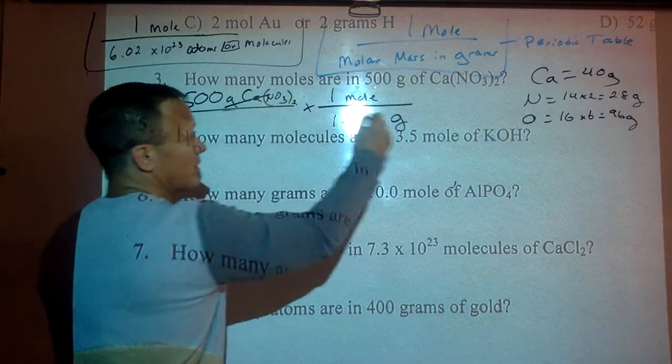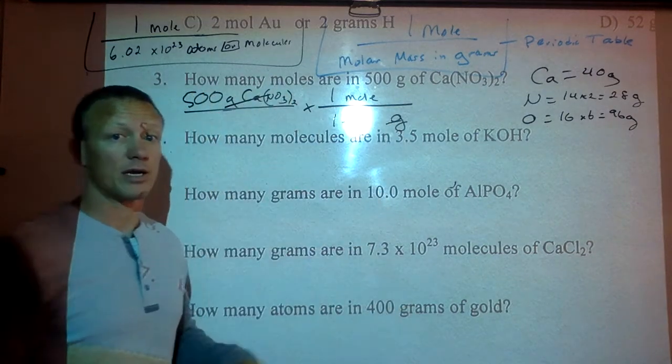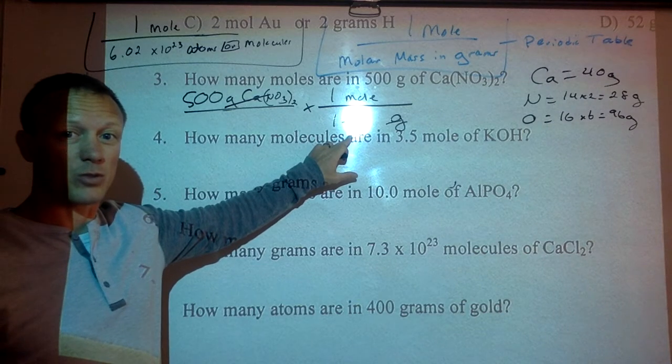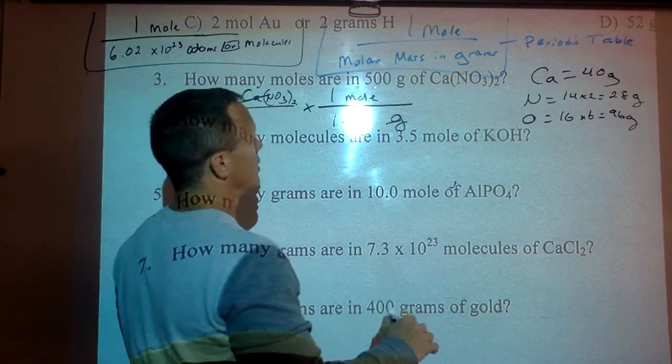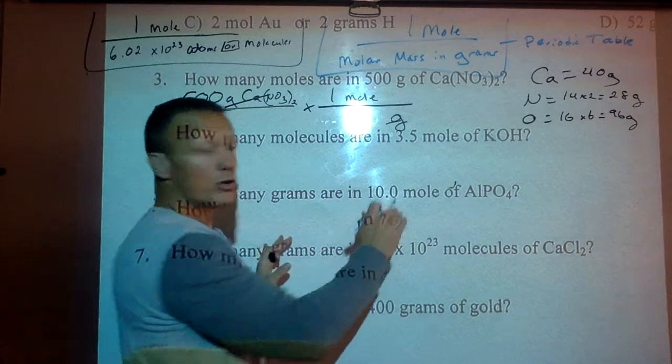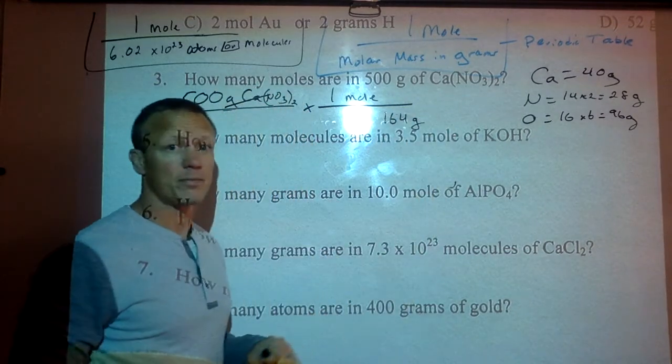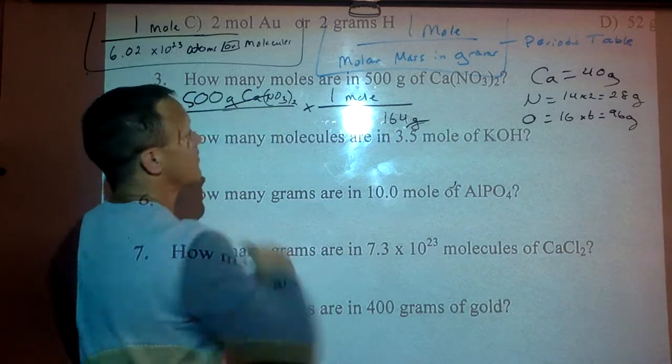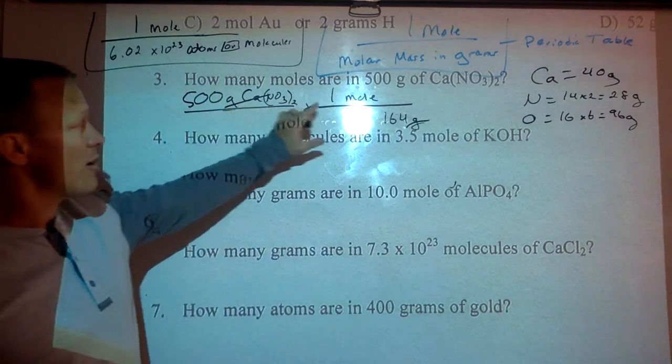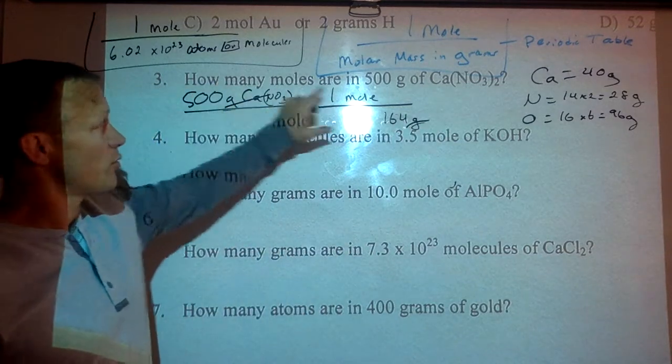Labels cancel. Grams and grams. On top and bottom, they cancel each other. That's 164. So my labels cancel right there. I know I'm done when I get to the label I want. If it wants to know how many moles, I'm done. I don't need to use Avogadro's number because it's not asking about particles or atoms or molecules.